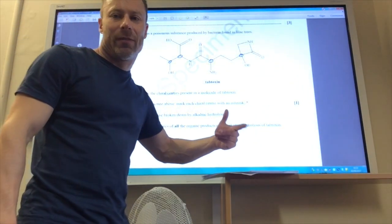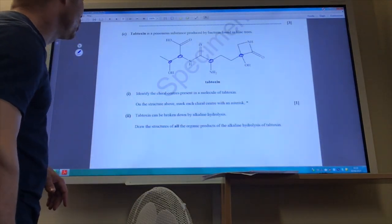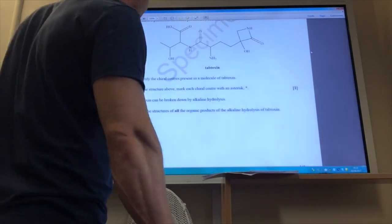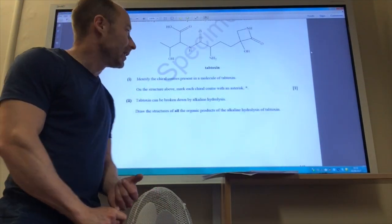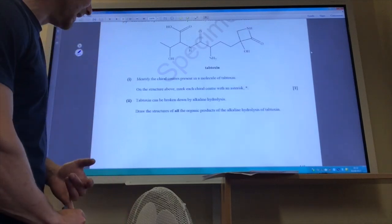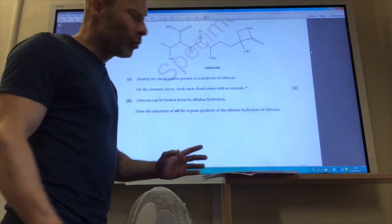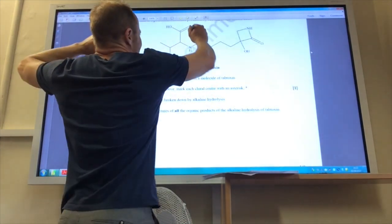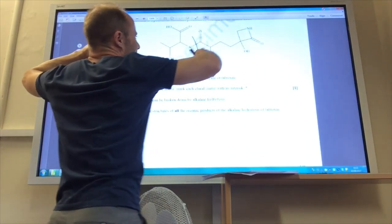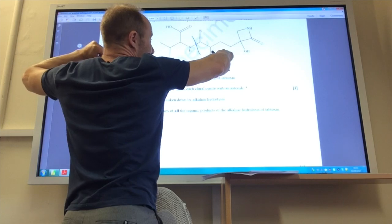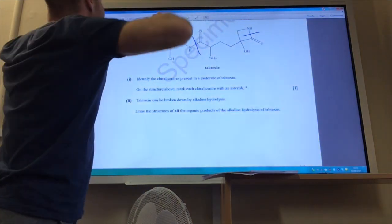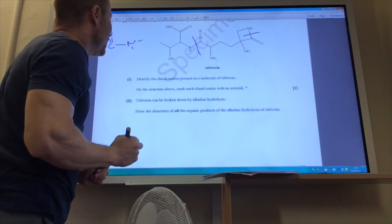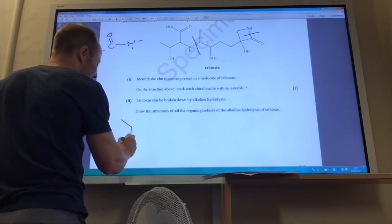I've done a circle, you do an asterisk. Then it can be broken down by alkaline hydrolysis. Draw the structures of all the organic products. Let's do that. Remember, I will break any amide link and any ester link. I haven't got any ester links here, but I do have some amide links. I'm just going to draw on a diagram where my amide groups are. This is just a normal alcohol. That's a carboxylic acid. There's an amide link there. This isn't an amide link because that's a carbon then attached to a nitrogen there. Your next amide link is there. Remember, you need a C double bond O directly attached to a nitrogen.